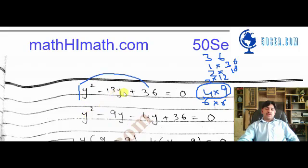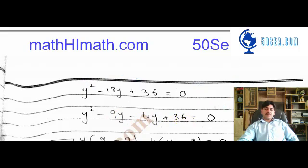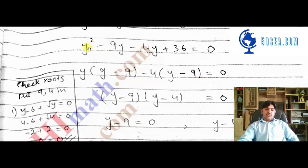So we have y² - 9y - 4y + 36 = 0. Taking common factors: y(y - 9) - 4(y - 9) = 0, which gives us (y - 9)(y - 4) = 0.